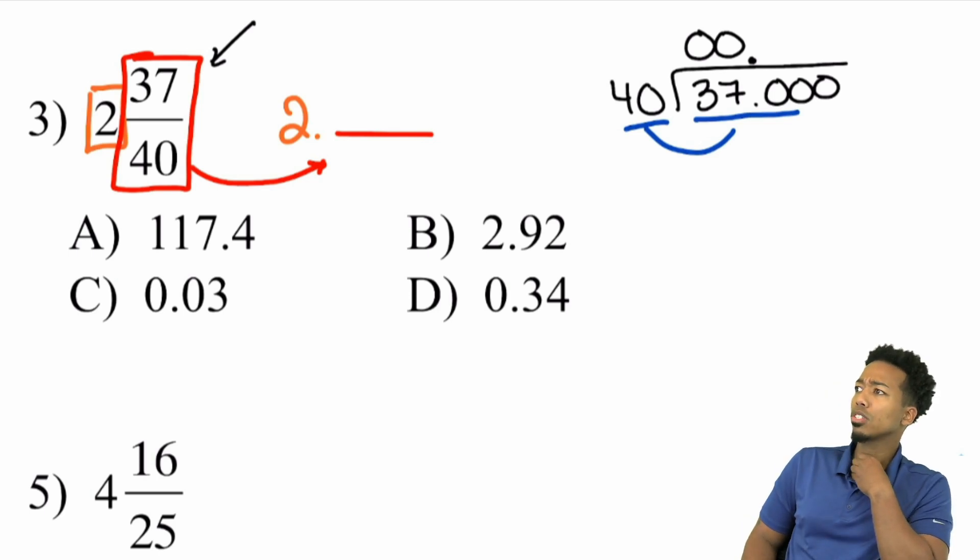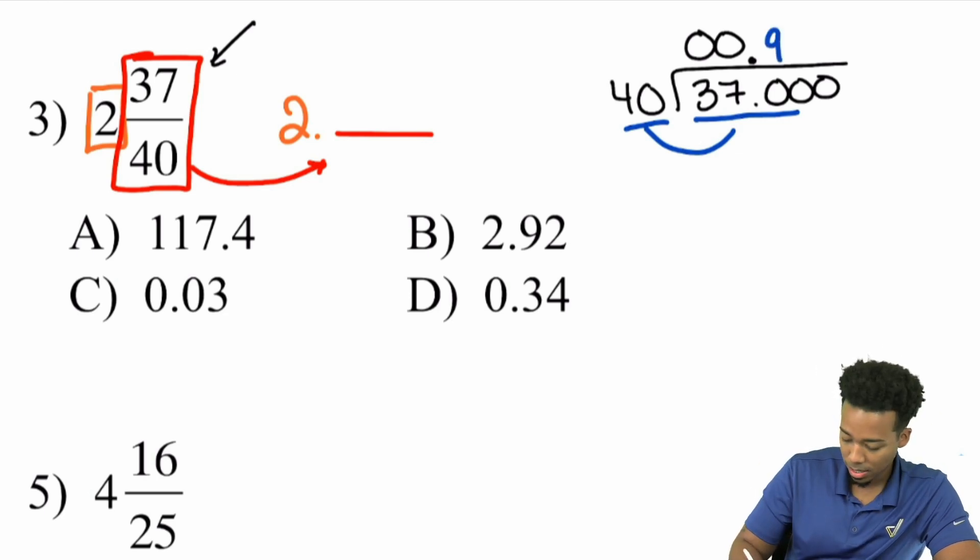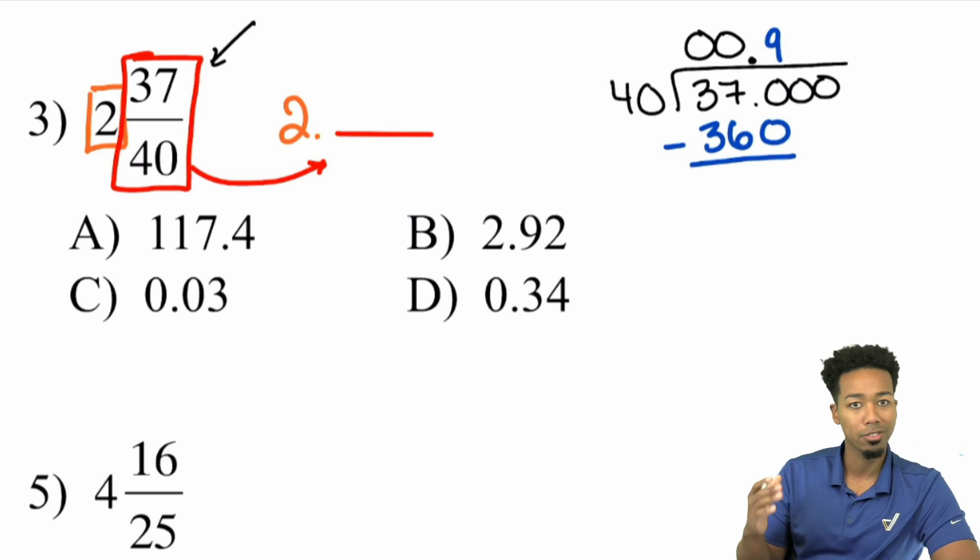Well, I know that 40 goes into 369 times. Yeah, it does. Absolutely. 40 goes into 369 times because 4 goes into 369 times. So with that, we'll put a 9 here because 40 times 9 is 360. So if you're not comfortable with your calculation skills in terms of long division, in terms of multiplying, dividing, adding, subtraction, subtracting, what you need to do is you need to make sure you go back to the section. If you're in the course, go to the section on mental math and calculating.